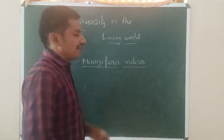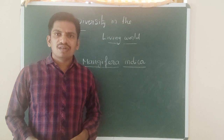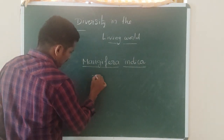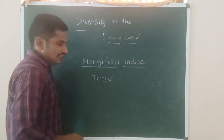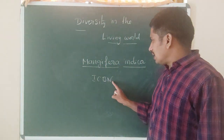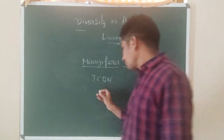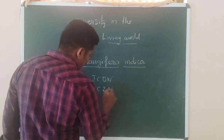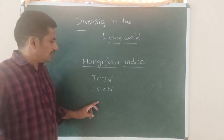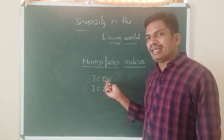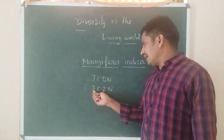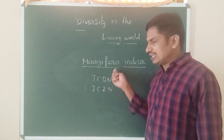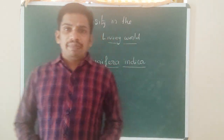For plants, ICBN — International Code for Botanical Nomenclature — is used. For animals, ICZN — International Code for Zoological Nomenclature — is used. ICBN gives names to plants, and ICZN gives names to animals according to their rules. These codes take care of giving the names to plants and animals.